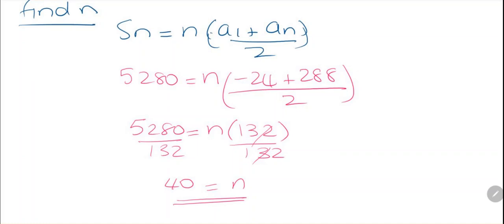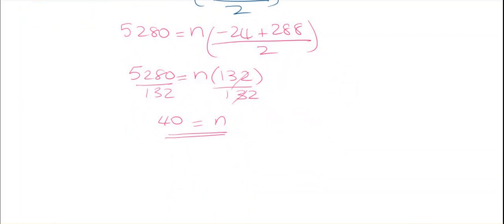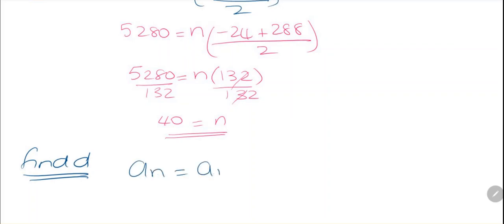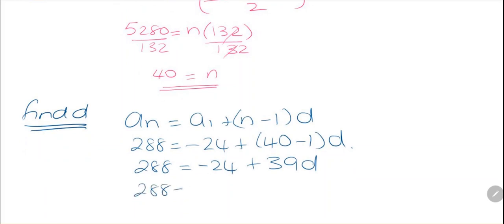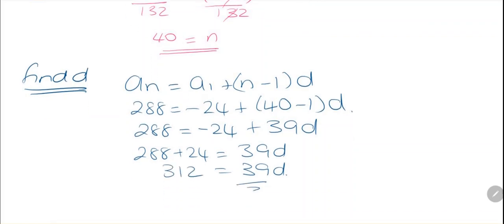Now we have n = 40 and need to find the common difference d. Using the nth term formula: an = a1 + (n − 1) × d. Substituting: 288 = −24 + (40 − 1)d = −24 + 39d. Adding 24 to both sides: 39d = 312. Dividing both sides by 39, d = 8.